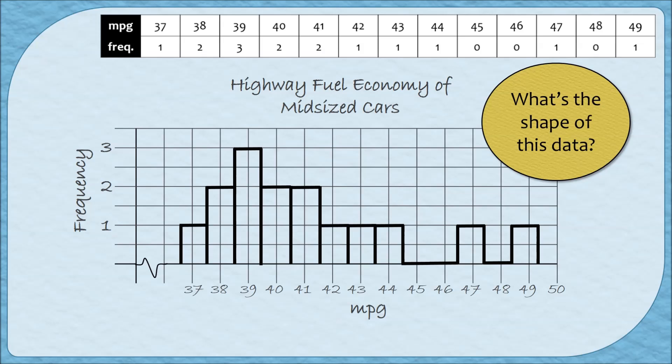As a follow-up question to creating a histogram, what's the shape of the graph that we just made? Remember that there are five shapes that we discussed in a previous video. They were approximately symmetric, skewed left, skewed right, bimodal, or uniform.